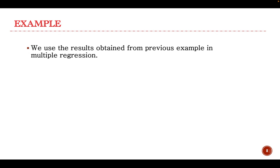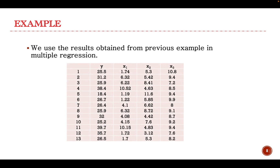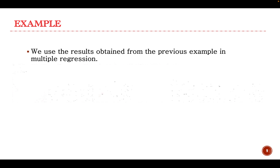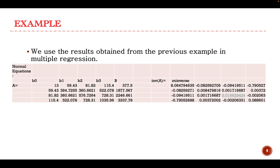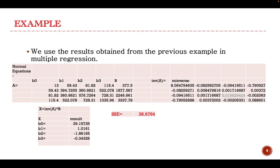Using the results from the previous multiple regression example, we have the data for Y and three independent variables with 13 observations. We have the normal equations, and on the right-hand side the inverse of the coefficient matrix. Multiplying the inverse by the column of constants gives us the coefficients and the constant term. Using the least squares method, the residual error SSE is 38.6764, and we obtain the regression equation Y in terms of the three variables.